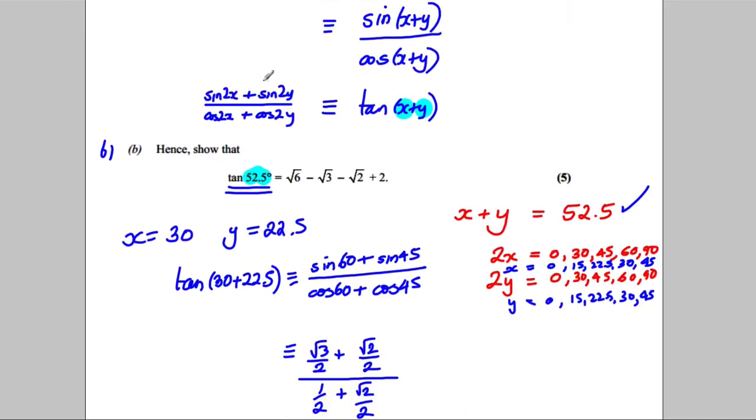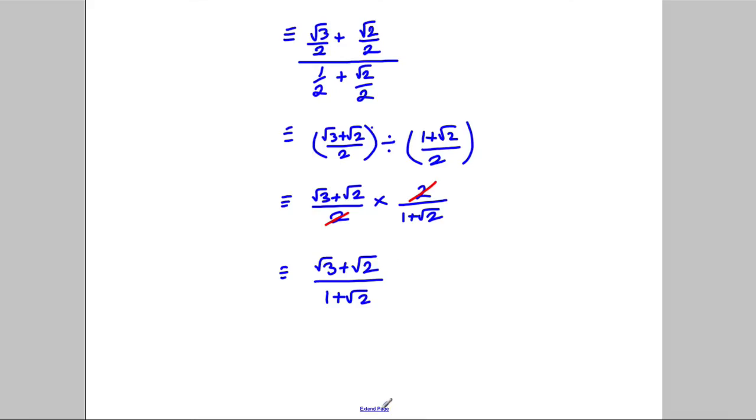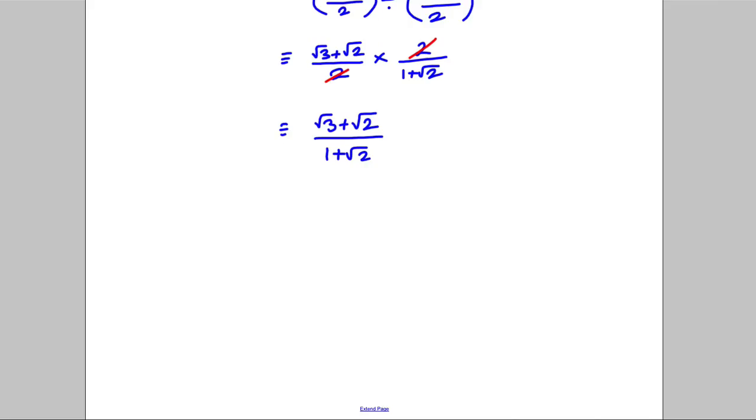Now that doesn't yet look like what I've been trying to show, but I can rationalise the denominator, so I'm going to multiply it by 1 subtract root 2 on top and bottom, and let's see what we get. So put brackets around here.